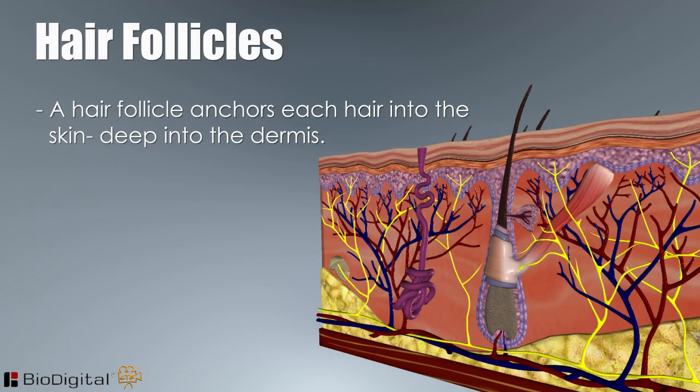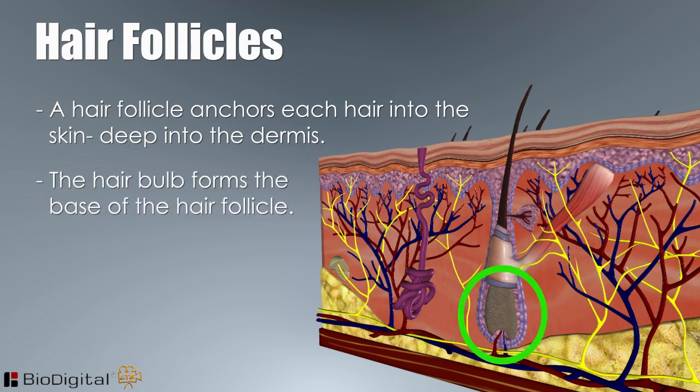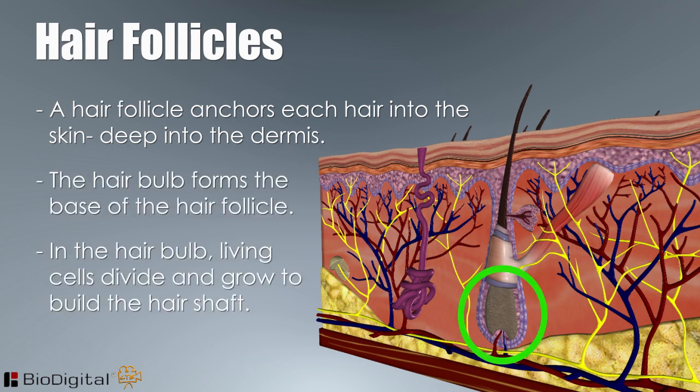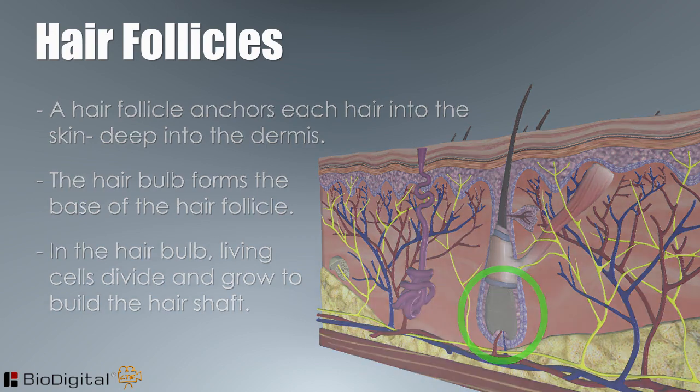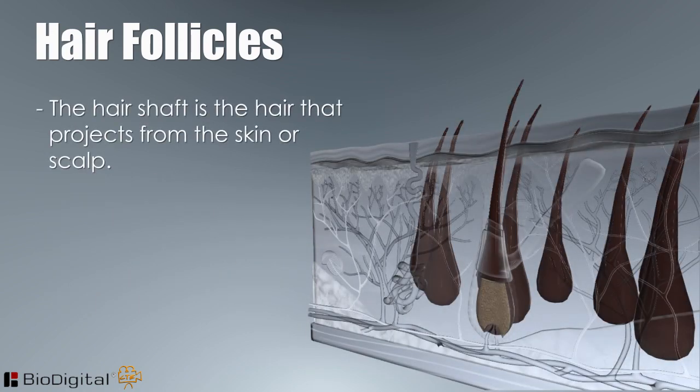A hair follicle anchors each hair into the skin, deep into the dermis. The hair bulb forms the base of the hair follicle. In the hair bulb, living cells divide and grow to build the hair shaft, which is the hair that projects from the skin or scalp.